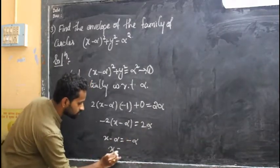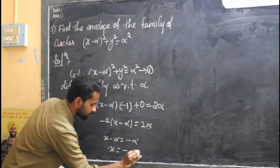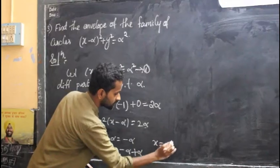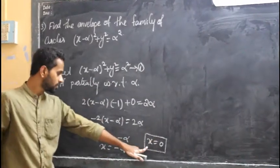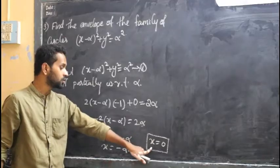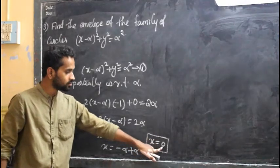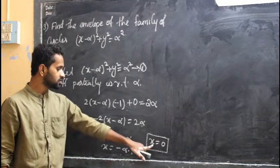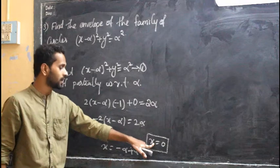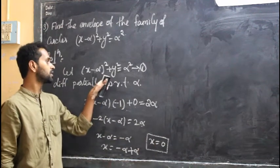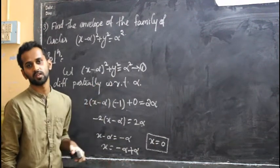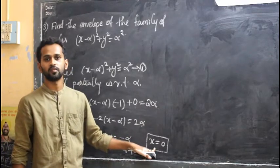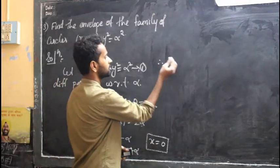So x equals minus alpha plus alpha, which gives x equal to 0. This is dou f by dou alpha equal to 0. Since there is no alpha remaining in dou f by dou alpha, I cannot substitute back into equation 1 to eliminate alpha. Therefore, since there is no alpha in dou f by dou alpha, we conclude that there is no envelope for this family of curves.